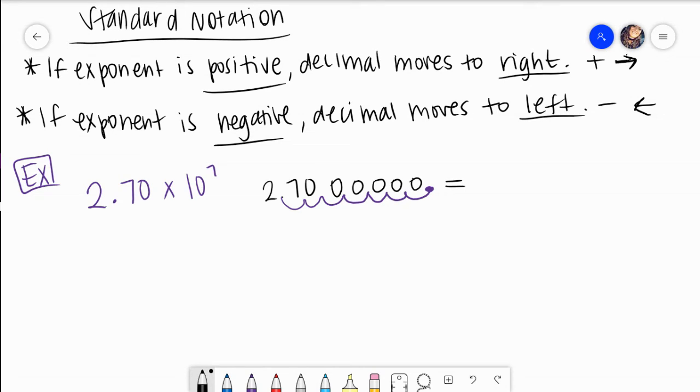If we actually rewrite this, what do we get? Two, seven, zero. One, two, three, four, five. One, two, three, four, five. We add our commas for every third.